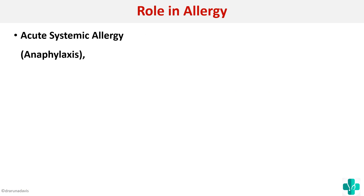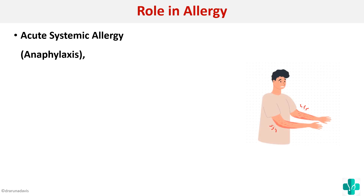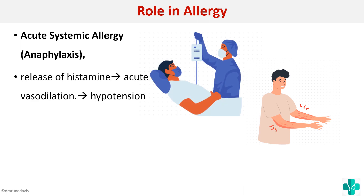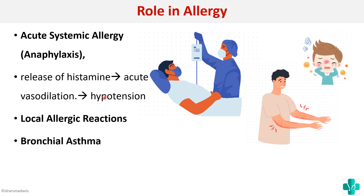Regarding the role in allergy: histamine plays a very important role in acute systemic allergy, that is anaphylaxis. When histamine is released, there is acute vasodilation which can cause hypotension and lead to anaphylactic shock. It is also an important mediator of local allergic reactions causing local edema, and it can cause bronchial asthma through bronchoconstriction.